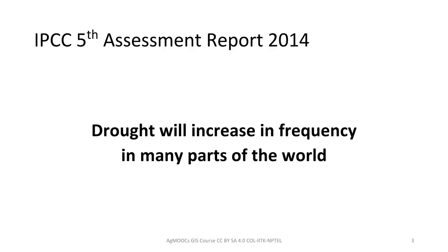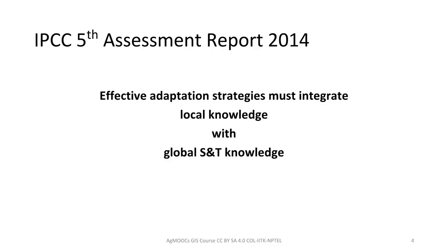In another talk, we learned about the IPCC — the Intergovernmental Panel on Climate Change — and the way it makes its assessments available through assessment reports. The last report appeared in 2014; it was called the Fifth Assessment Report. One very important forecast in that report is that drought will increase in frequency in many parts of the world. The report also pointed out that effective adaptation strategies must integrate local knowledge with globally-derived scientific and technological knowledge.